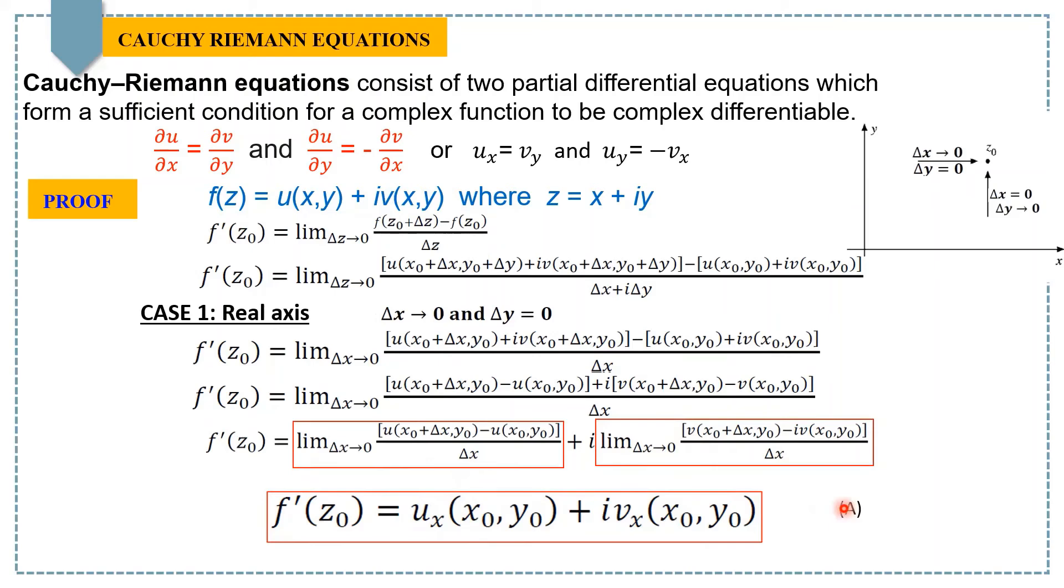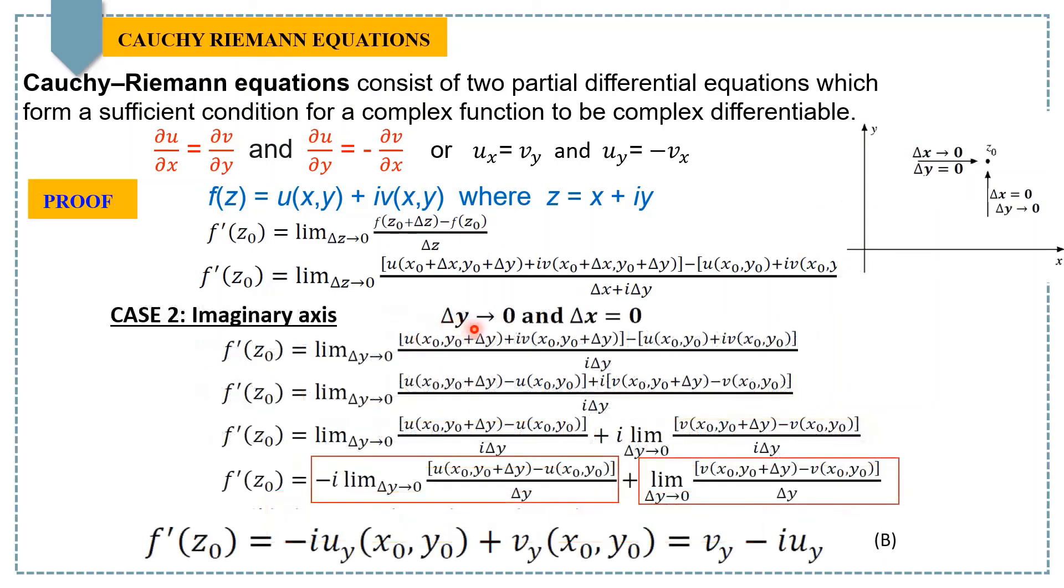Now, we repeat the same steps again, but this time we take the limit along the imaginary axis. And for that, we simply say Δy → 0 and Δx = 0. By repeating the same steps, now by keeping this time Δy limit tends to 0,